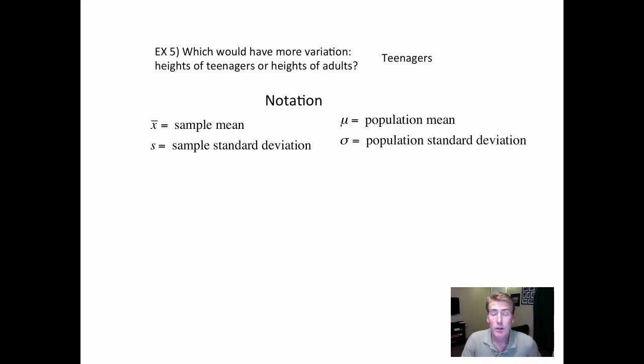If you're talking about the whole population, so if this was the whole United States, let's say, then we would use the mu—here's the mu for population mean—and standard deviation would be the sigma.